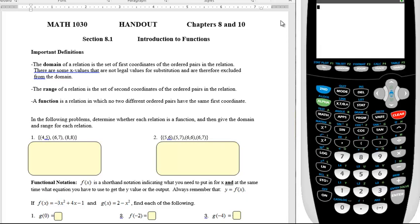The range of a relation is the set of second coordinates of the ordered pairs in the relation, or the y values.